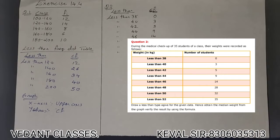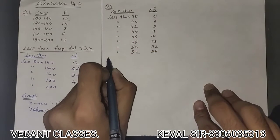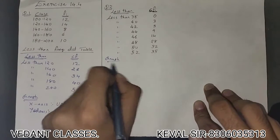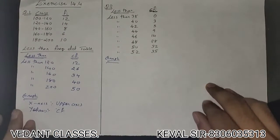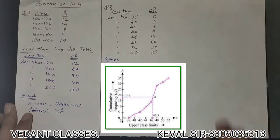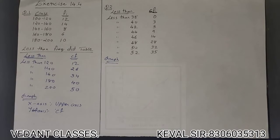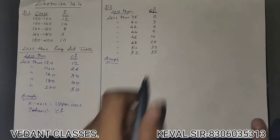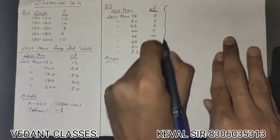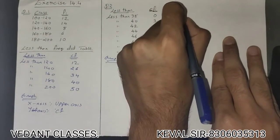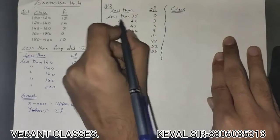We make the graph as shown, and then we need to verify the value of the median using the formula. To do that, we first need to reconstruct the classes from the less-than data.